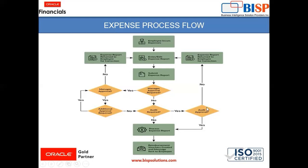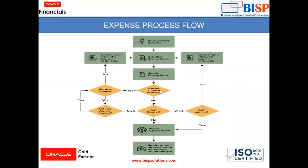If the auditor is rejecting the expense report, the expense report will be returned to the employee for correction and the employee needs to re-enter the expense report. But if auditor approval is also received, then after receiving all approvals the expense report will get processed and reimbursement will be done. So this was all about the expense process flow.